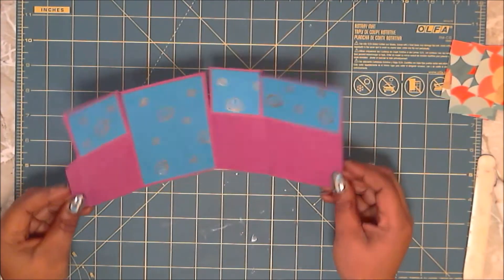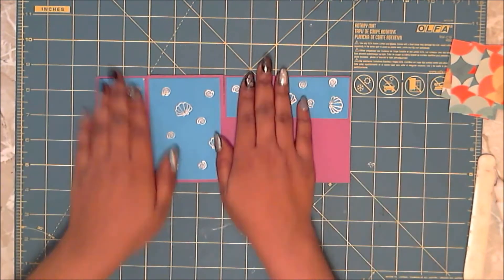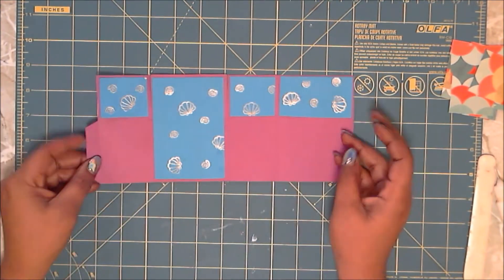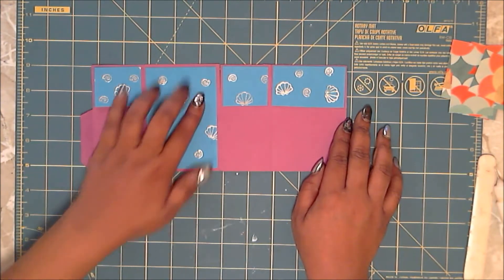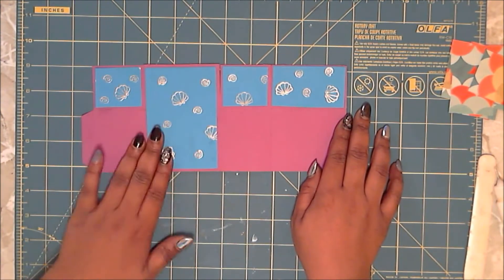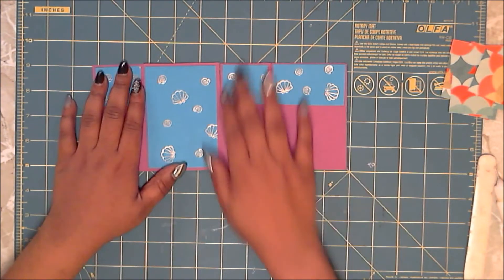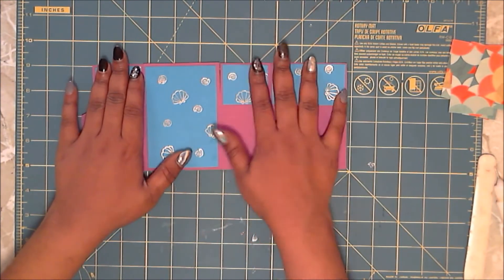As you can see here, this is the placement of them. So your bigger piece goes against the back wall of the box, and then you have your smaller pieces on the flaps.